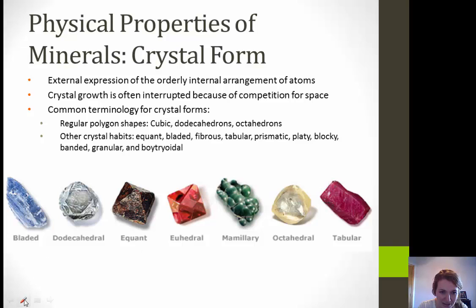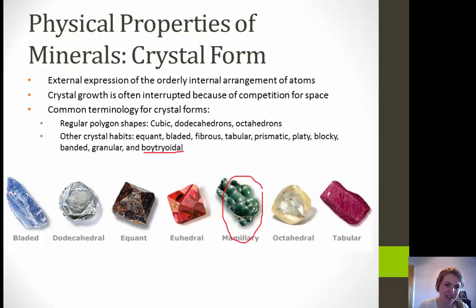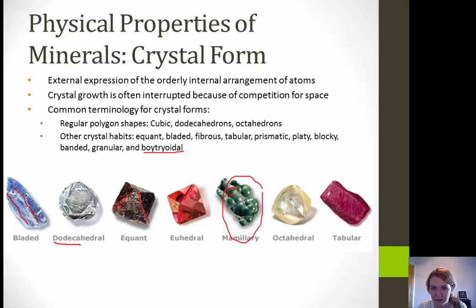If you're confused by what these words mean, here are the visual examples. Starting with the mineral labeled bladed, you can see how it forms in these little blades. Dodecahedron — we can see that is a regular polygon shape; you can count the sides. For equant, you can see it's equal in all directions. Botryoidal means that you have these little circular, smooth growths. Octahedra is again a polygon shape, and tabular means it forms in a tab.